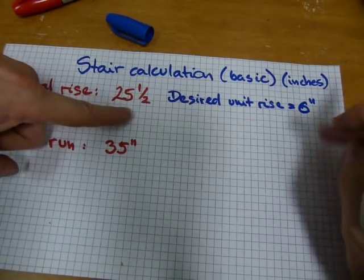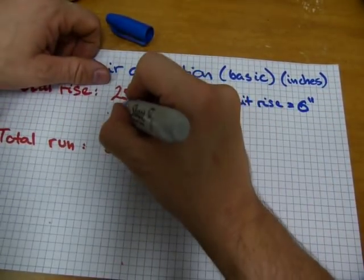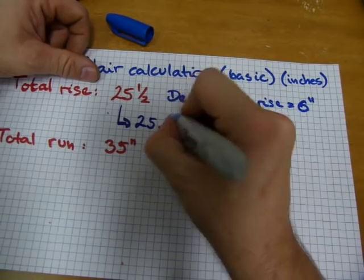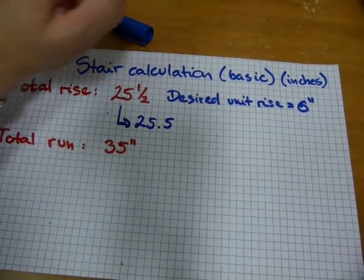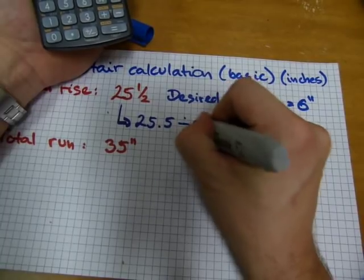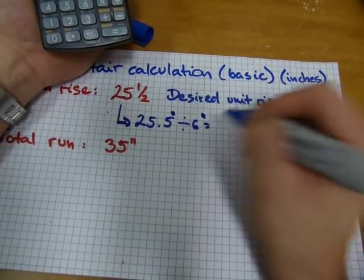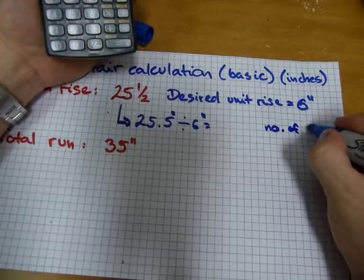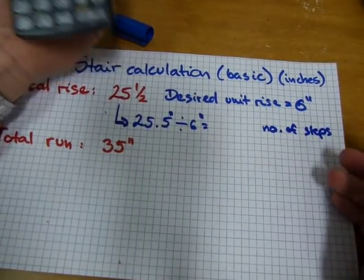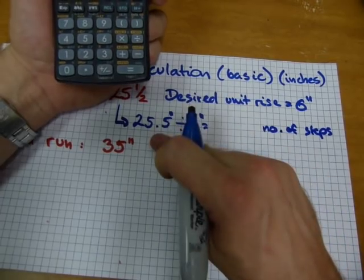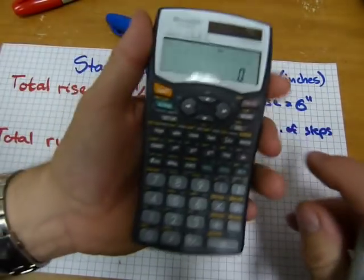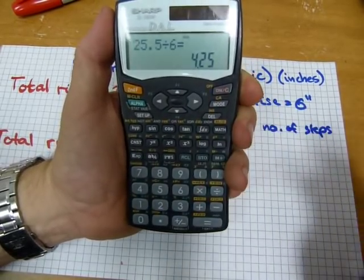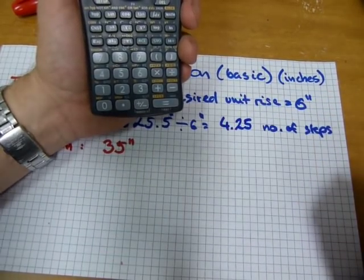So that's why it's desired, because we need to see how many of these 6 inches can we fit into the 25 and a half inch total rise. So what we need to do is divide that number by that number. But like I said, you cannot enter into the calculator 25 and a half in fractional format. I'm just going to convert it right away to 25.5. Now we can divide that number by 6 to get the number of steps. 25.5 divided by 6 equals 4.25, 4.25 steps.